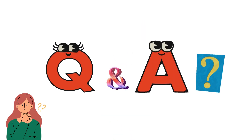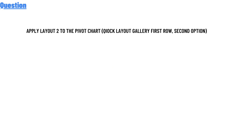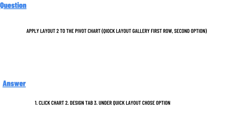So let's get on the questions. Our question is: apply layouts to the pivot charts — Quick Layout gallery, first row, second option. The correct answer is: one, click chart; two, designs tab; three, under Quick Layout, choose the option.